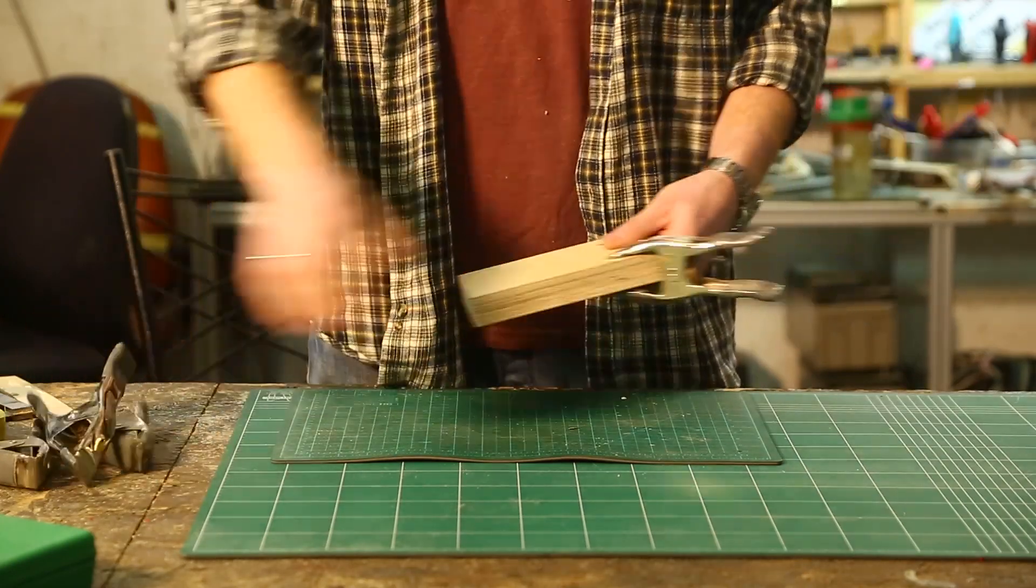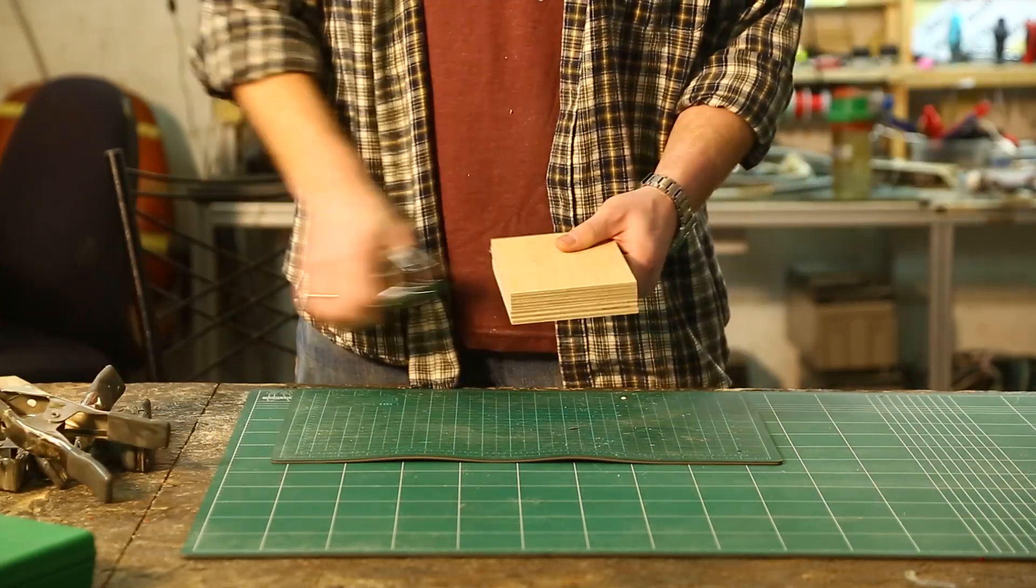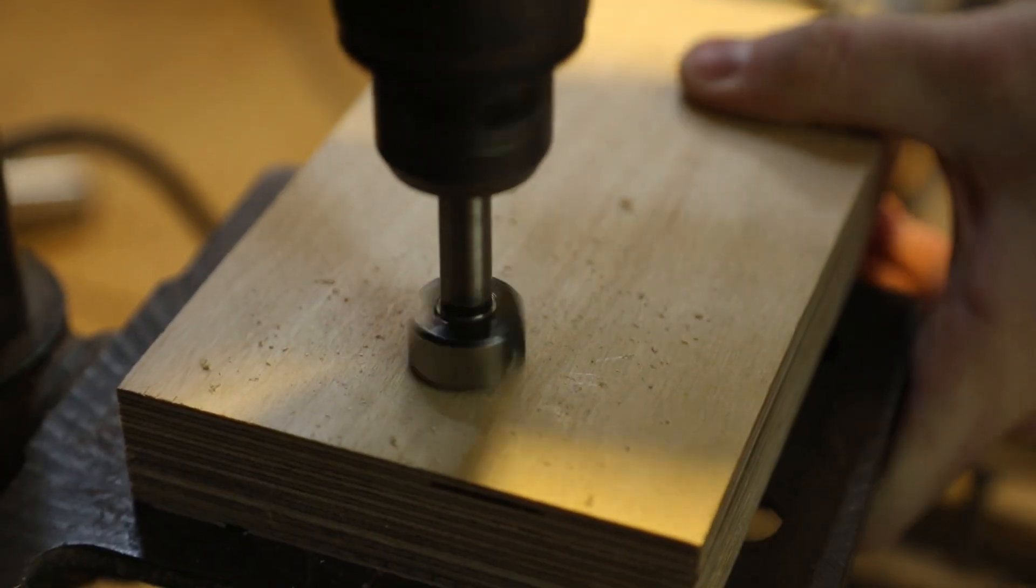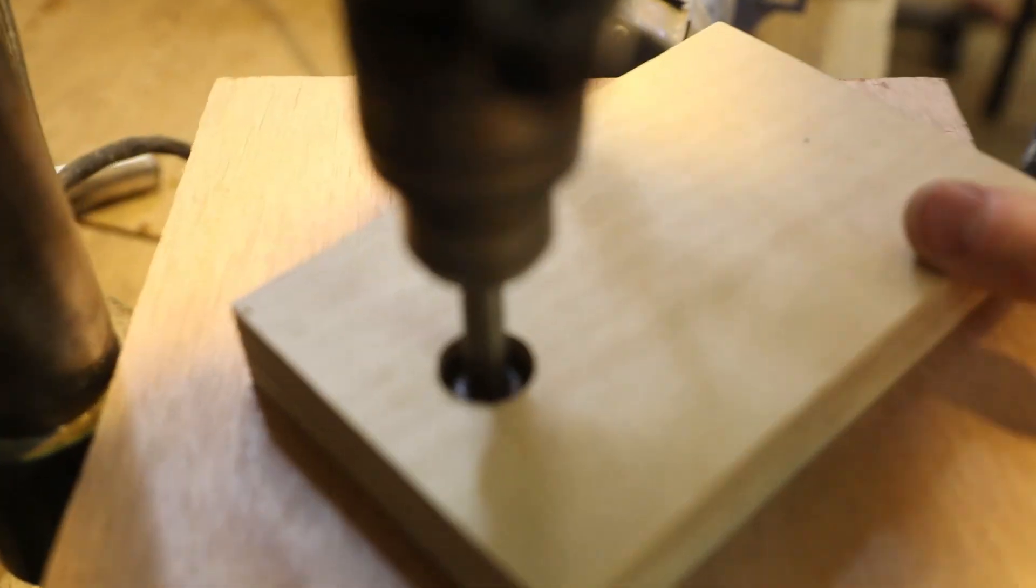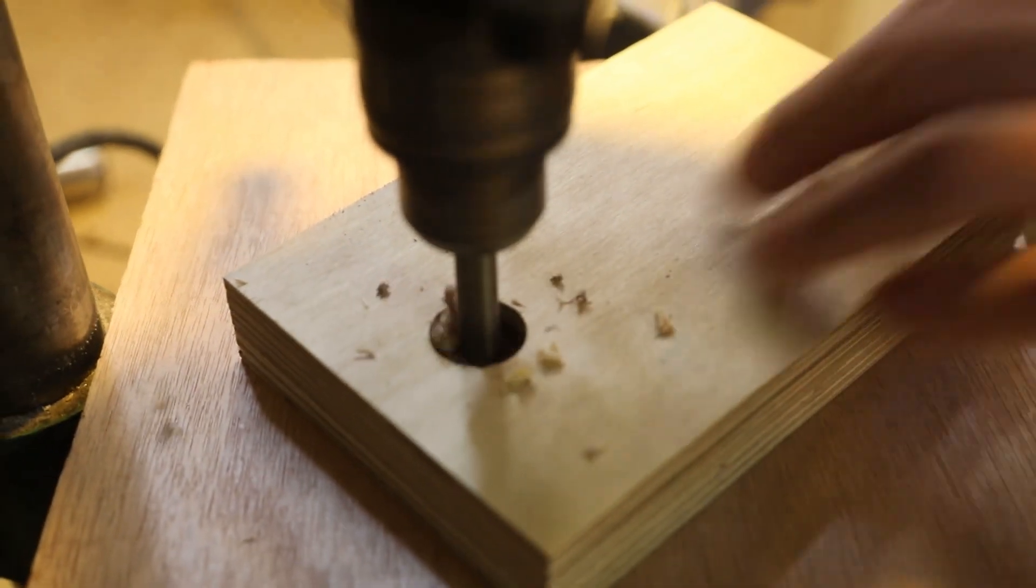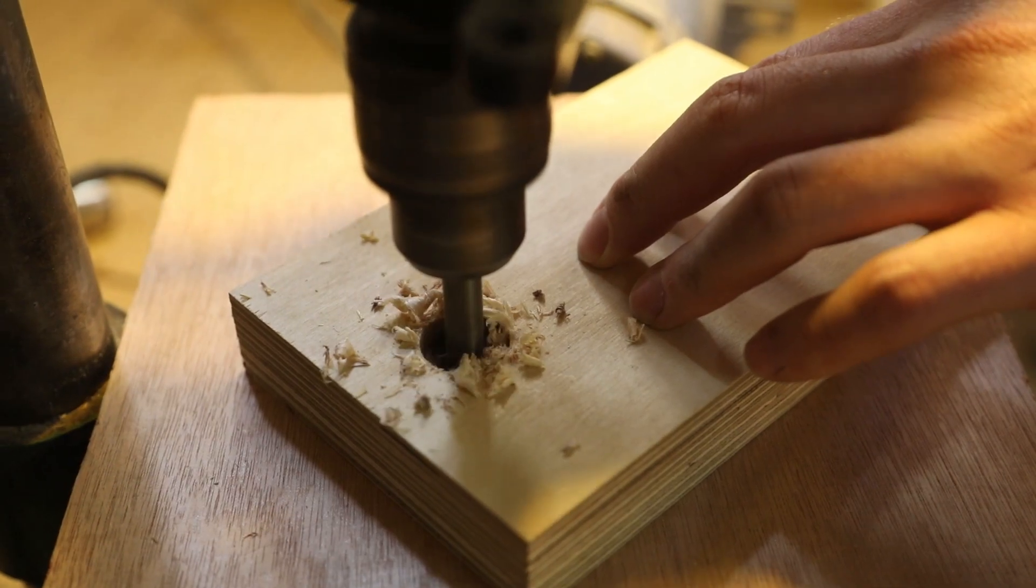After the glue had some time to set, and before permanently attaching the two parts of the base, I had to drill a bunch of holes in the top part. I started with a 7/8 of an inch hole part way through to hold a couple of bearings. I finished this hole with a 5/8 of an inch bit, drilling all the way through.